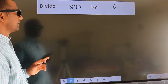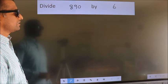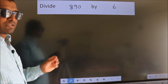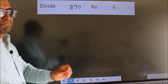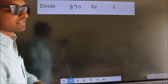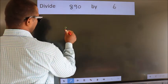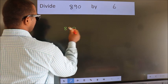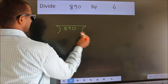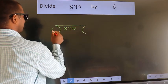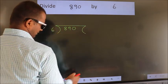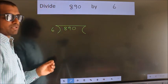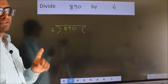Divide 890 by 6. To do this division, we should frame it in this way: 890 here, 6 here. This is your step 1.